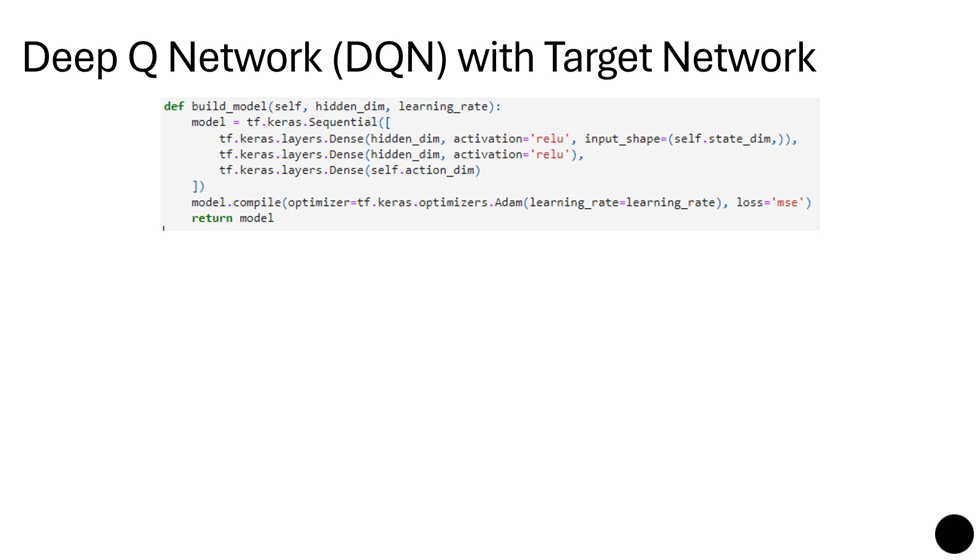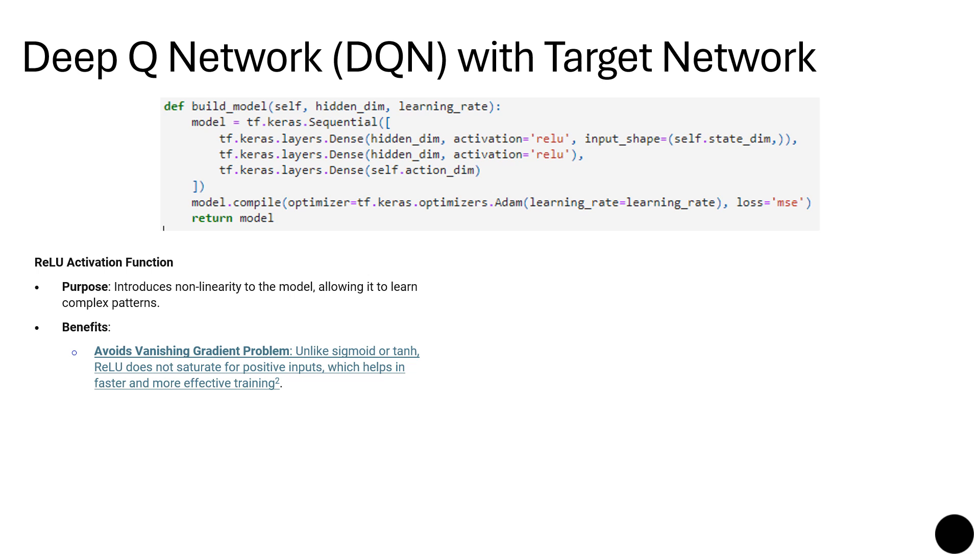Now later it will be updated. So we move to the build model to create the layers. This is the simplest one with the input, one hidden layer, and an output layer. For this we have used the activation ReLU function because it introduces non-linearity to the model, allowing it to learn complex patterns. That depends on how difficult your problem is to solve. If you have anything complex, then you need to find out which activation function you could use. ReLU avoids vanishing gradient problems. Unlike sigmoid or tanh, ReLU does not saturate for positive inputs, which helps in faster and more effective training.